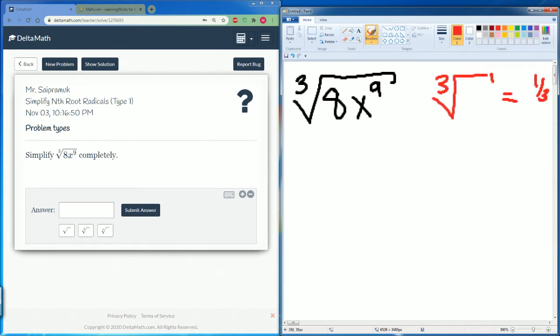So that's all I'm going to do. I'm going to write 8 to the 1/3 power, and I have x to the ninth. The cube root here is going to be divided by 3.